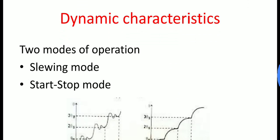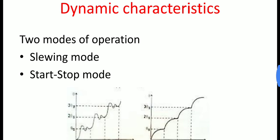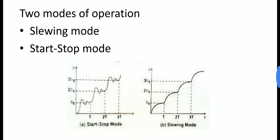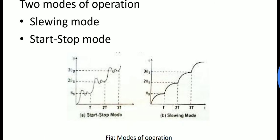Now we will see dynamic characteristics. A stepper motor is said to be operated in synchronism when there exists strictly a one-to-one correspondence between the number of pulses applied and the number of steps through which the motor has actually moved. There are two modes of operation: slewing mode and start-stop mode.